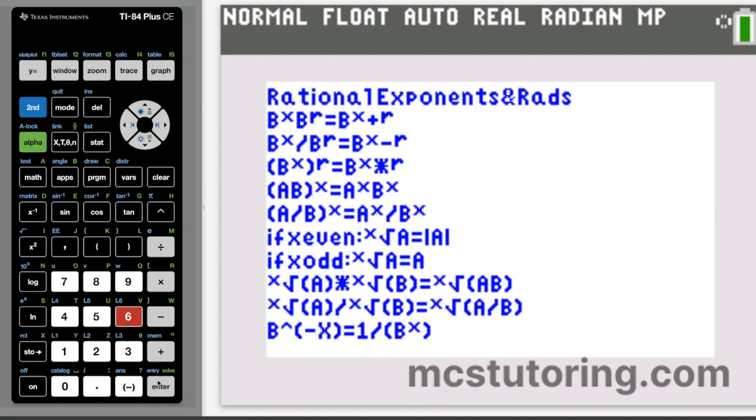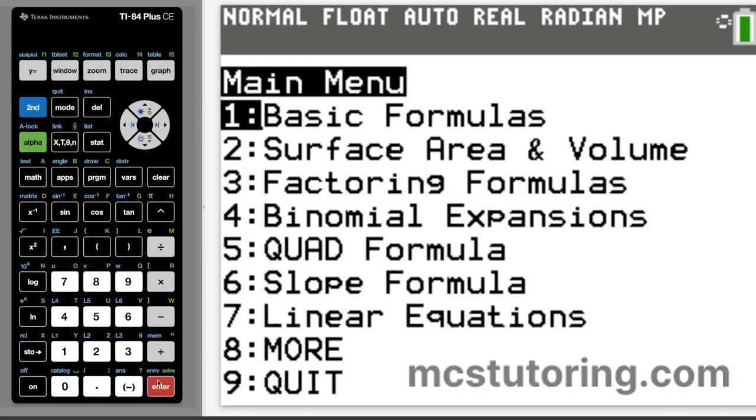Now, last few things here. If we have the x root of a times the x root of b, it's going to be the x root of ab. And then if we have the x root of a divided by the x root of b, it's the x root of a over b. And last thing, if we have b raised to the negative x power, it's 1 over b to the x power. I include that because that trips up so many students.